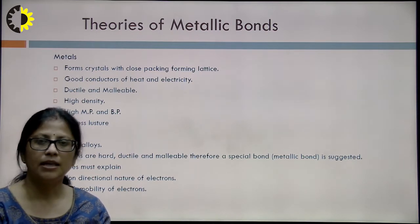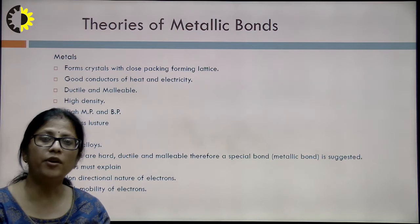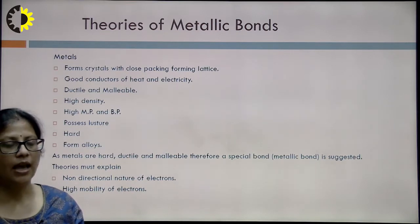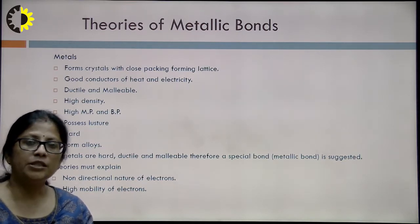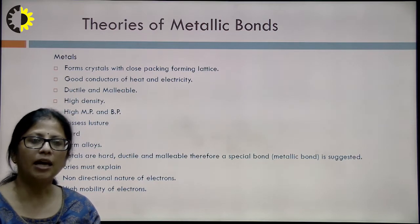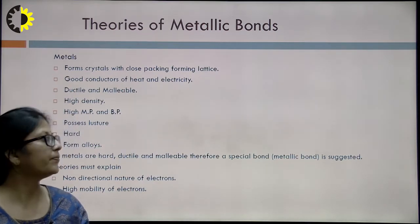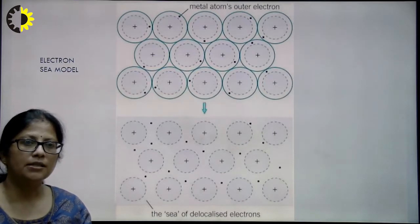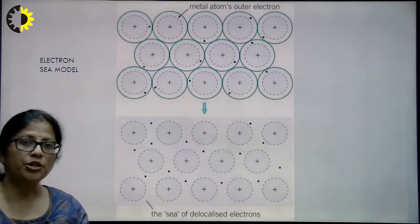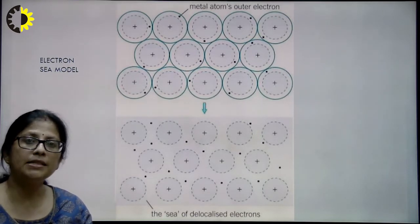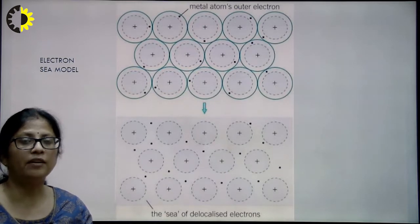As metals are hard, ductile and malleable, a special bond — that is, a metallic bond — is suggested. The theories related to metallic bonds must explain the non-directional nature of electrons and high mobility of electrons. The first theory is the electron sea model. The electron sea model says that the metallic structure is formed from positive centers known as kernels — atomic kernels — embedded in a gas of free-flowing valence electrons.